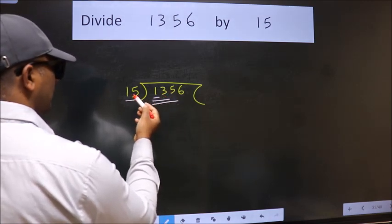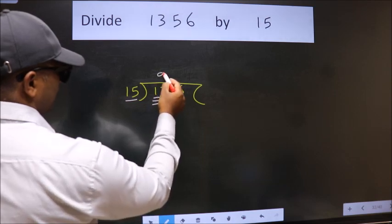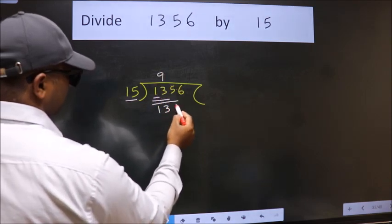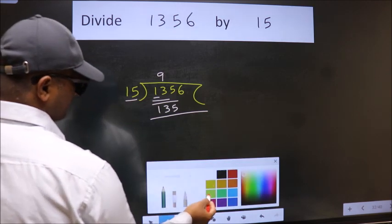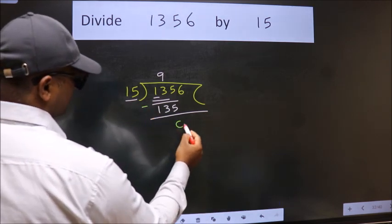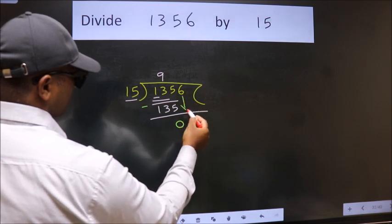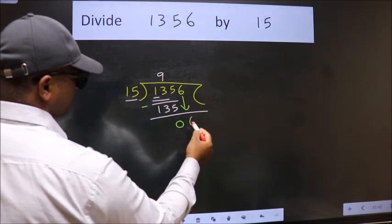When do we get 135 in the 15 table? 15 times 9 equals 135. Now we should subtract. We get 0. After this, bring down the beside number, so 6 comes down.